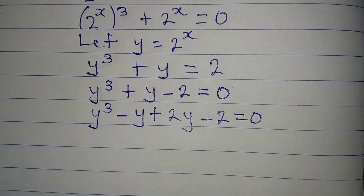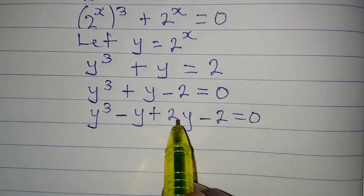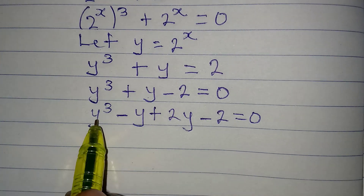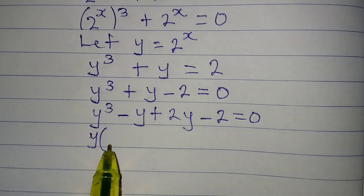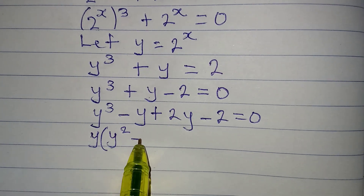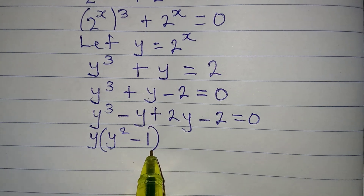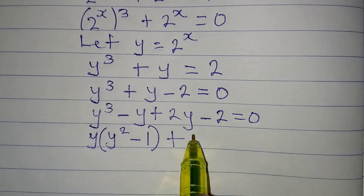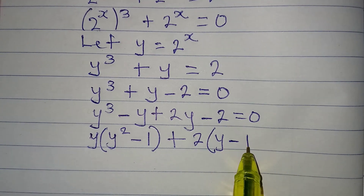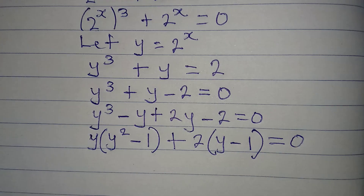Now we factorize each pair. From the first two terms, y is common, giving y(y² − 1). From the last two terms, 2 is common, giving 2(y − 1), since 2 divided by 2 is 1. The whole expression equals zero.